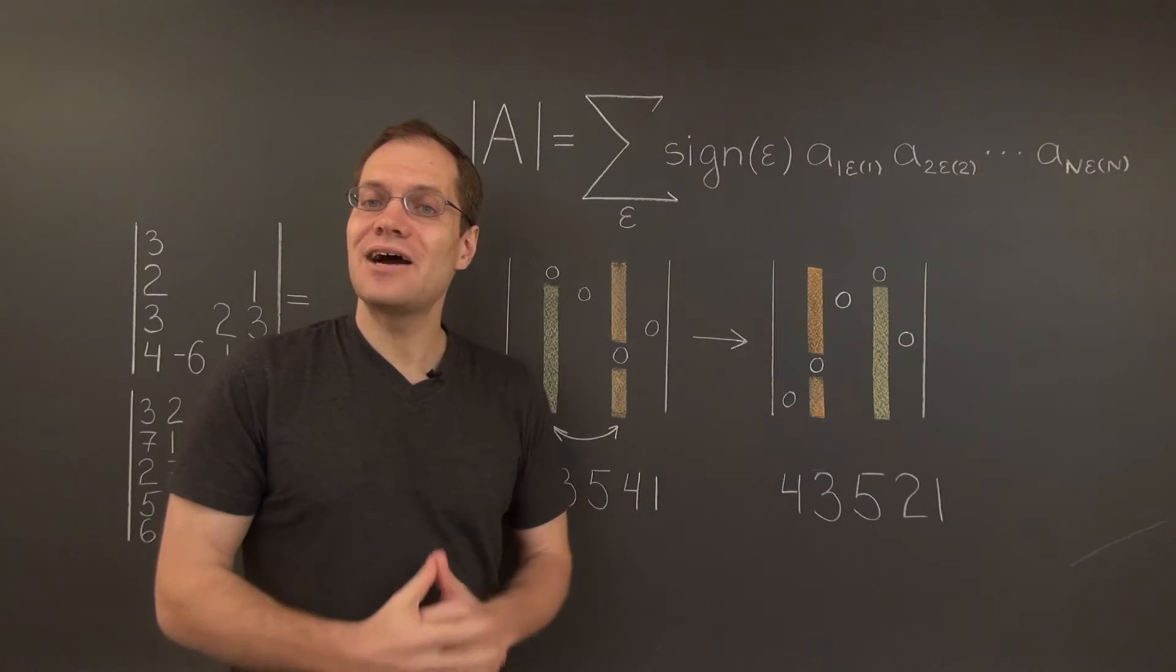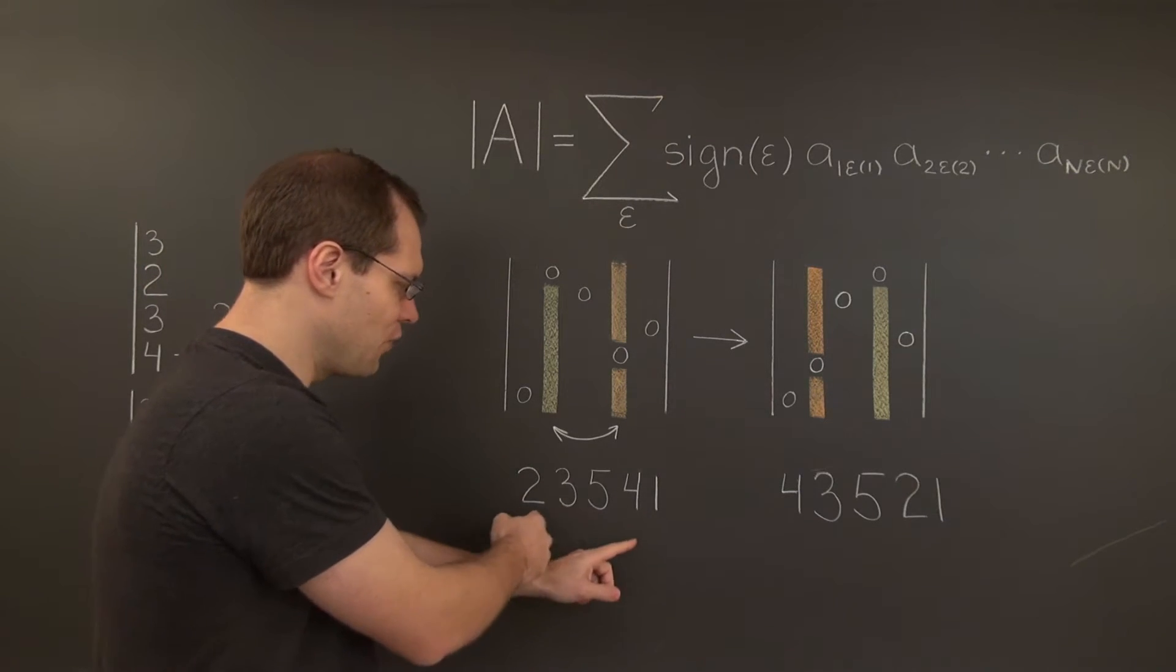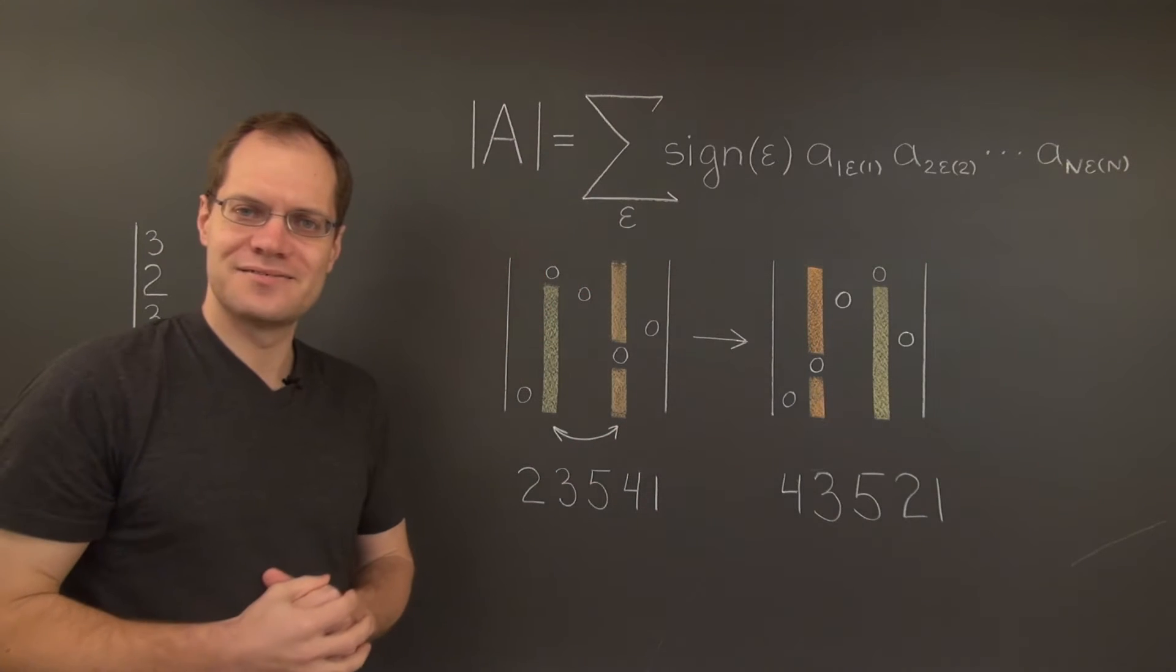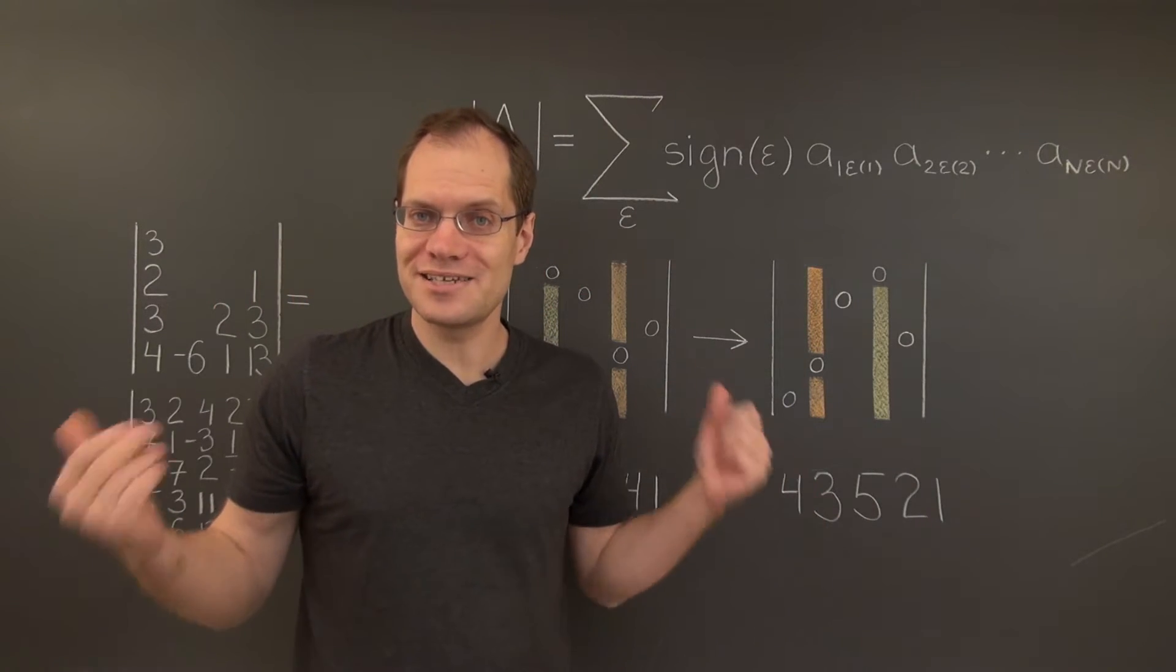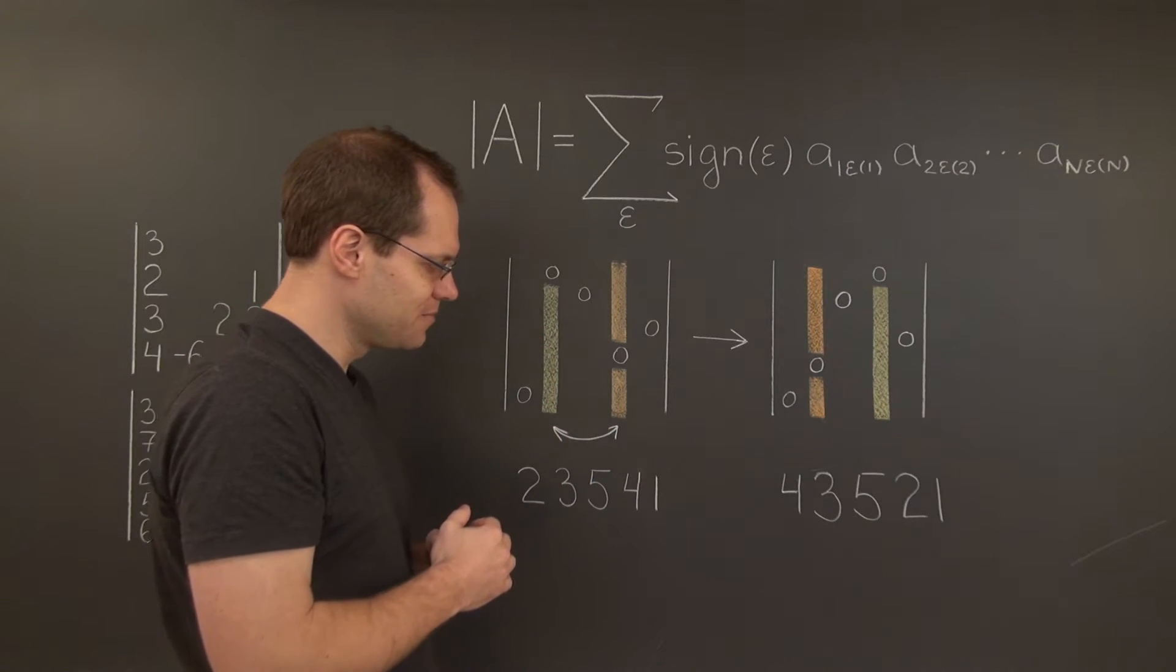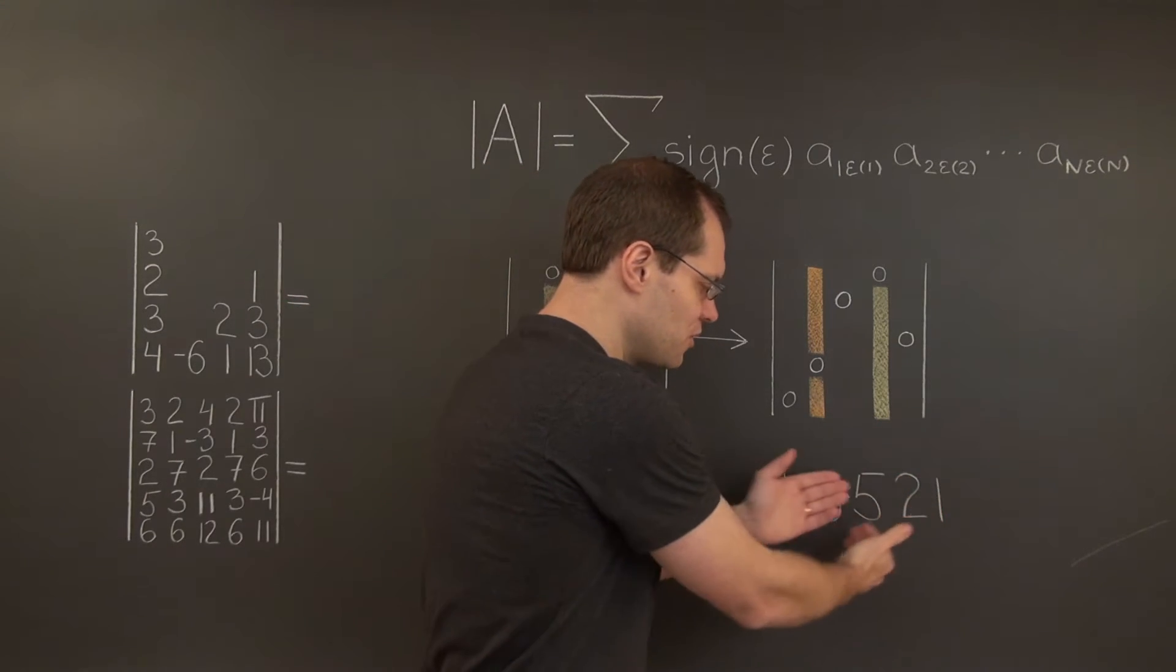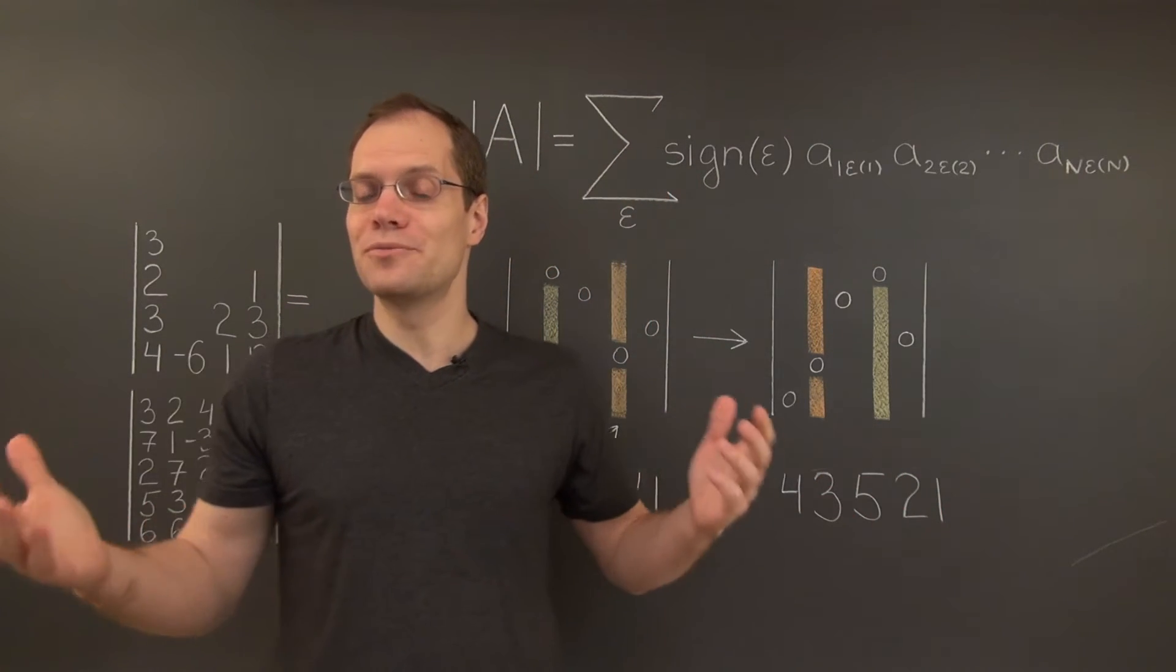And do you see how these two permutations are related? Of course you do. The 2 and the 4 traded places. That's not at all surprising, of course. This happened because we switched columns 2 and 4, so it's completely unsurprising that as a result of that, the numbers 2 and 4 traded places in these two permutations.